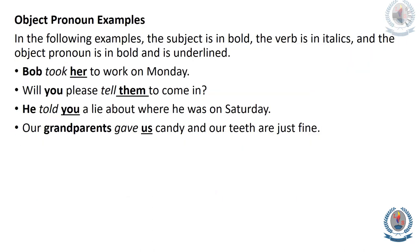Object pronoun examples. In the following examples, the subject is in bold, the verb is in italics, and the object pronoun is in bold and underlined. Bob took her to work on Monday. Will you please tell them to come in? He told you a lie about where he was on Saturday. Our grandparents gave us candy and our teeth are just fine.